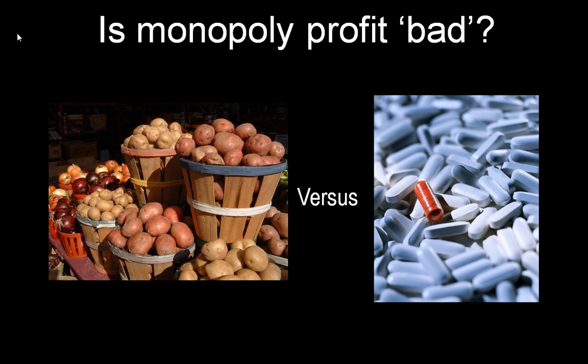This would then push prices down to competitive levels, that is, we would get a situation where prices would equate with marginal costs, just as we would under perfect competition. In the potato seller story, monopoly and the existence of profit is seen to have negative consequences for the island society.